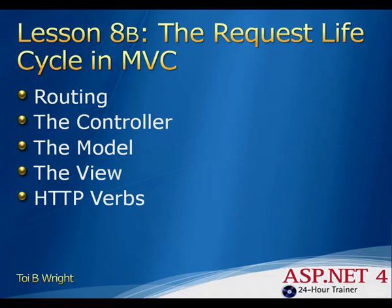The ASP.NET MVC framework uses a routing table to determine how the request should be handled. When you create an MVC application, routing is automatically enabled in the global.asax.cs file. The route is used to determine which controller and action should be used to process the request.